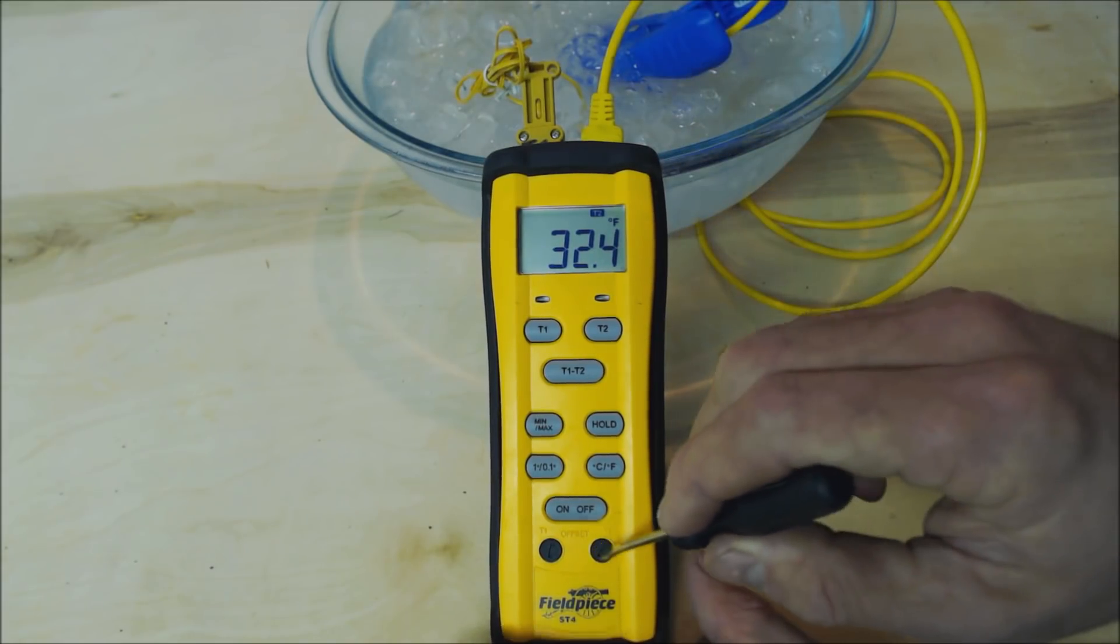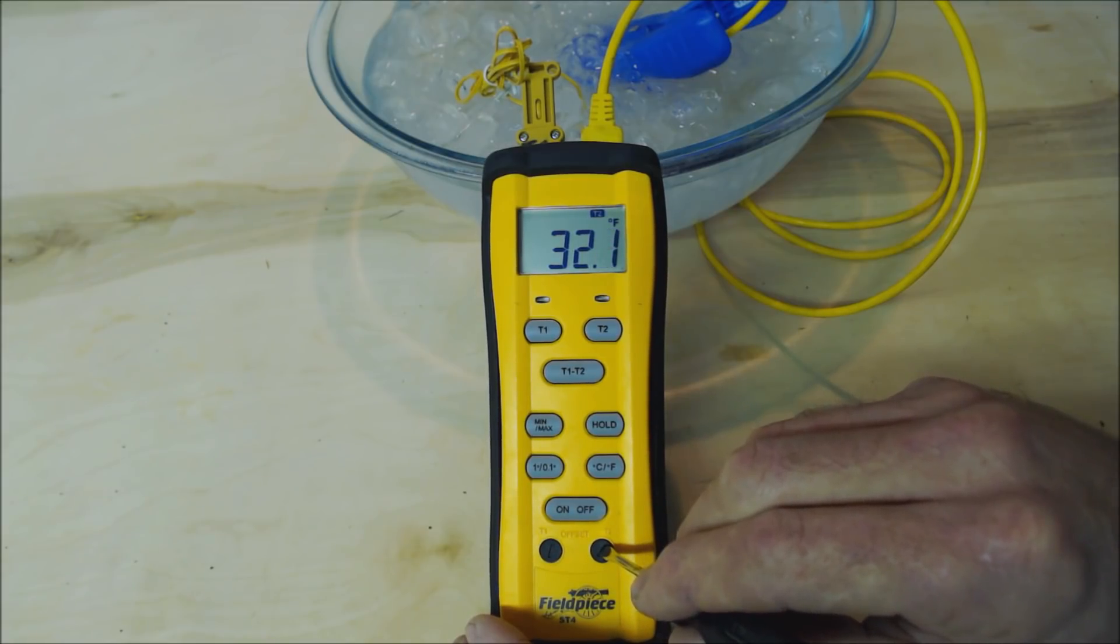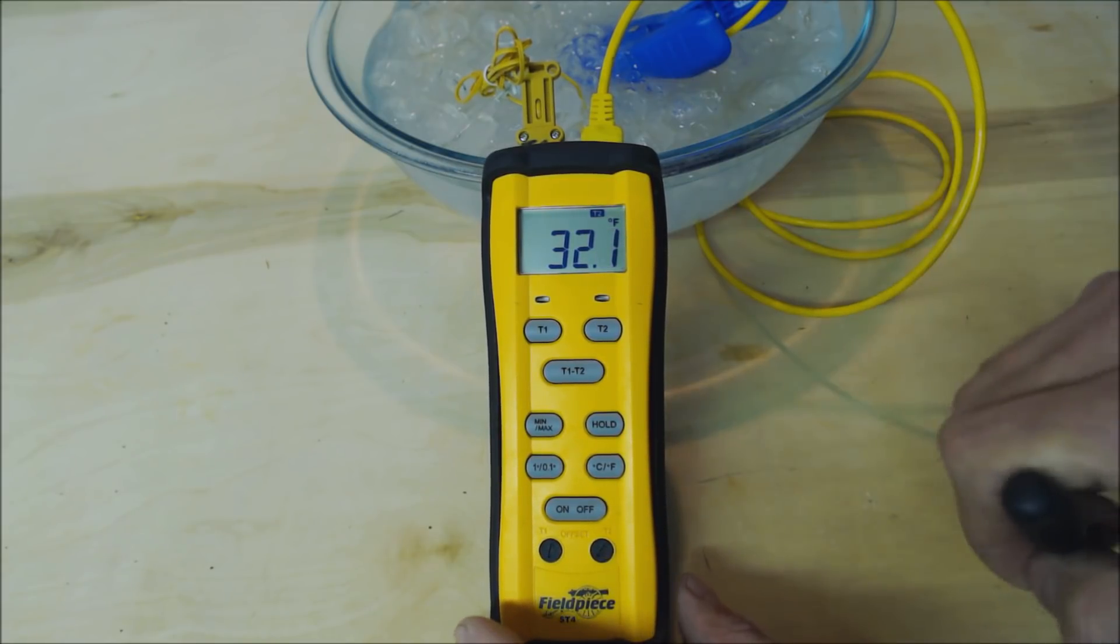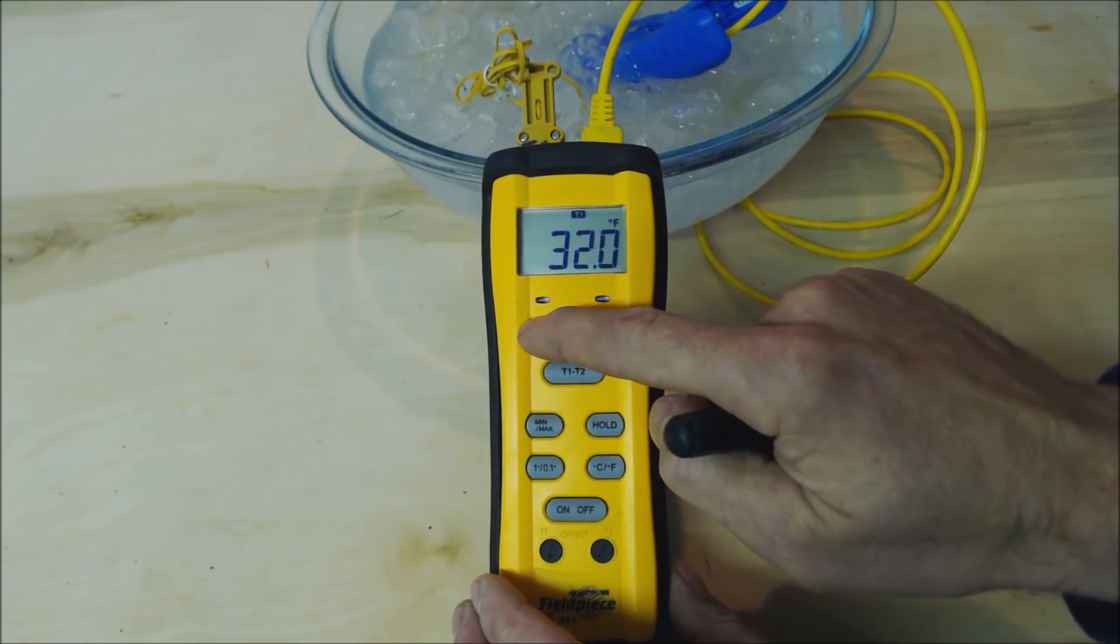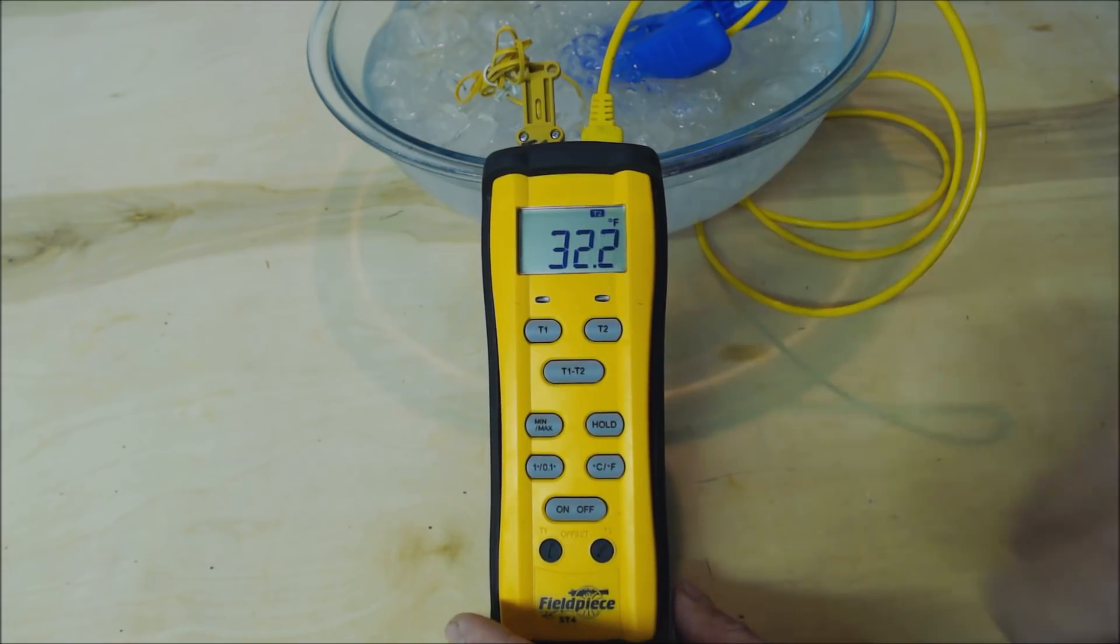So now we'll just adjust our T2. We're just going to turn it clockwise until we get to 32 degrees which we're there now. Now also you want to check your T1 just to make sure that there's no change in that as well. And that's how you do it.